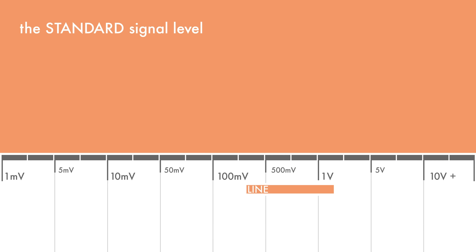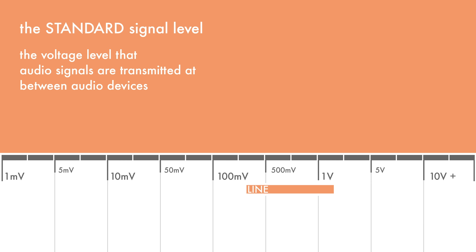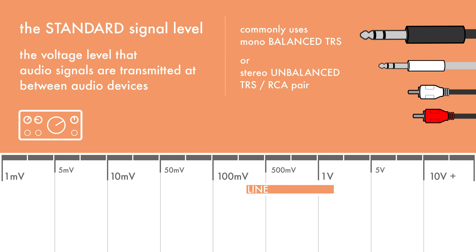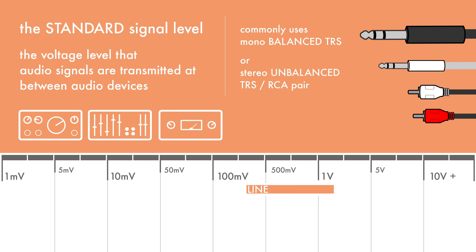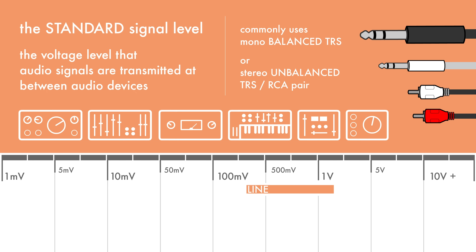Line level is the standard signal level used in audio systems. It is the voltage level that audio signals are typically transmitted at between audio devices in the studio. The outputs of an audio interface, for example, are line level. Mixing consoles, compressors, and effects units in general, modern synthesizers, DJ mixers, hi-fis, and consumer electronics such as TVs and MP3 players are all devices that operate at line level. So having established that, let's see what other audio levels are present in the studio, and what we can do to convert them to line level so that they can interface with the rest of our audio gear.